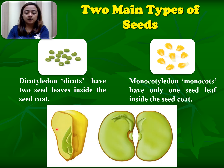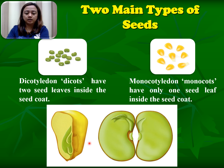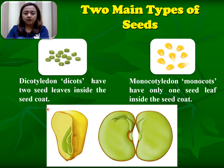So here, look at the picture. Dicotyledon — in this part — has two seed leaves, this one and this one. And for monocot, only one. So that is an example of dicots and monocots.